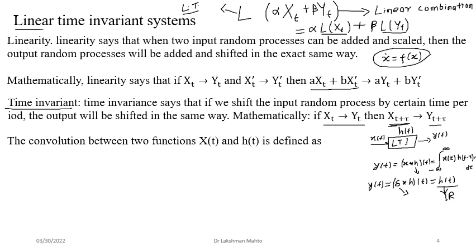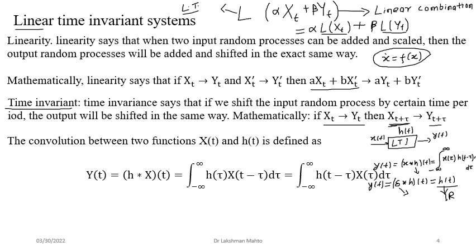H(t) is not directly called a transfer function in this context; it is the impulse response. When we take a general input, the solution is written as a convolution of the impulse response H and the input signal. Convolution is a symmetric operator, so it does not matter whether you put X first or H first. This is the explicit form of the output for any general input X.